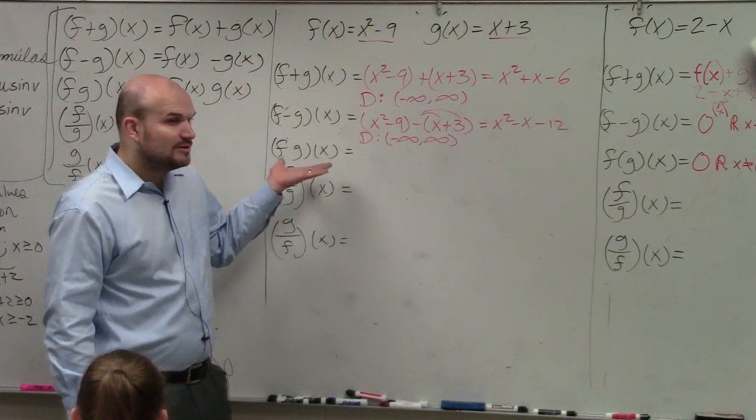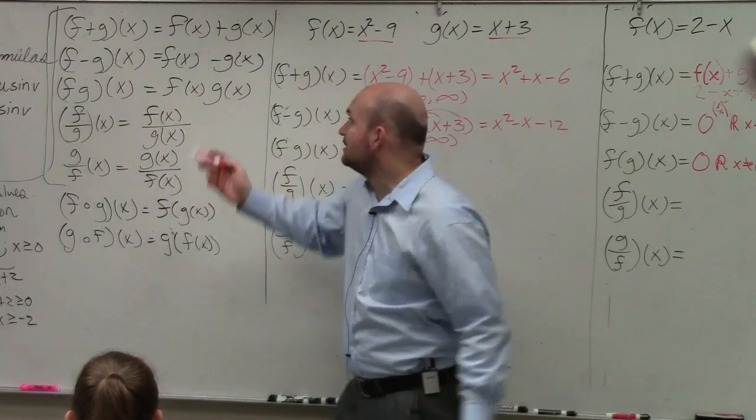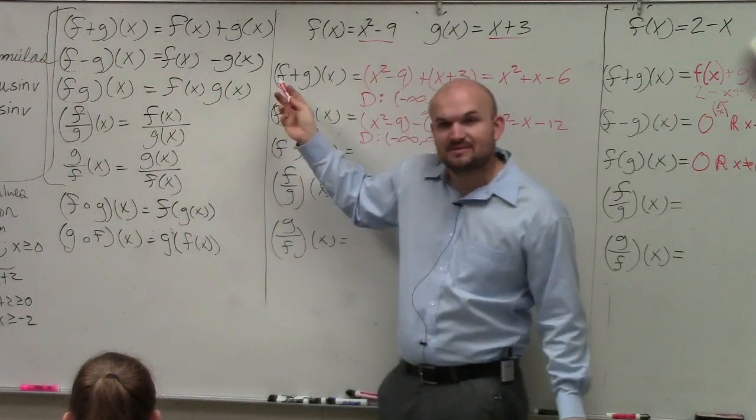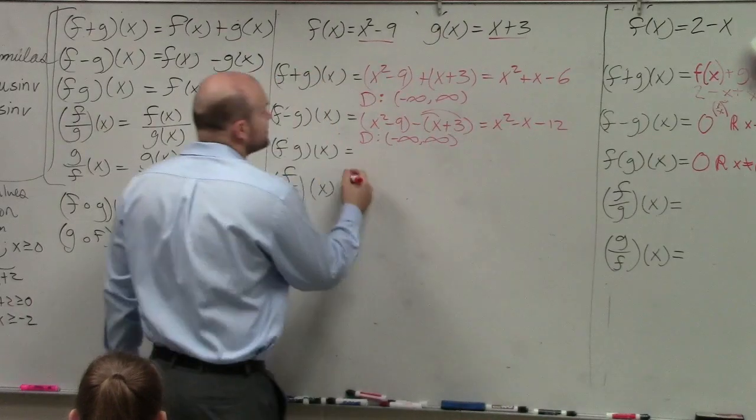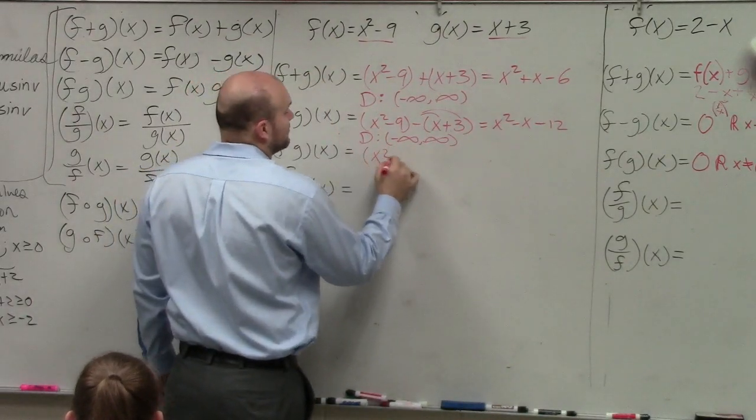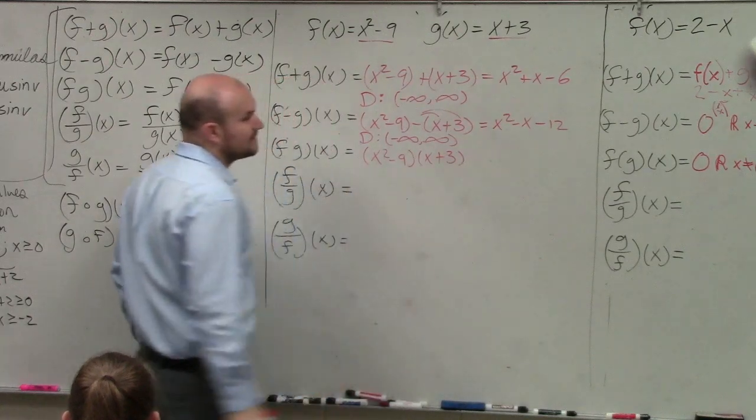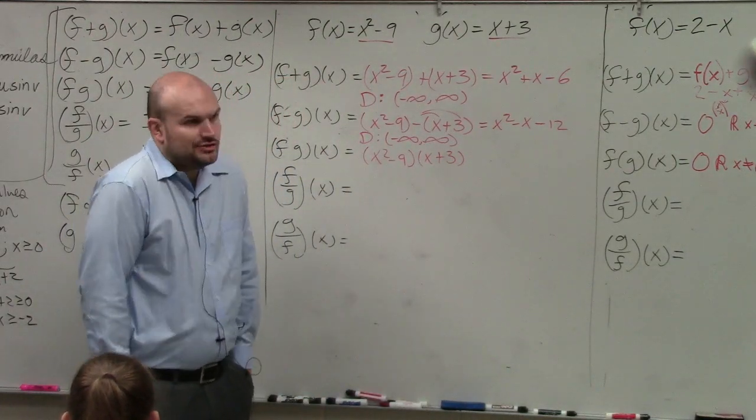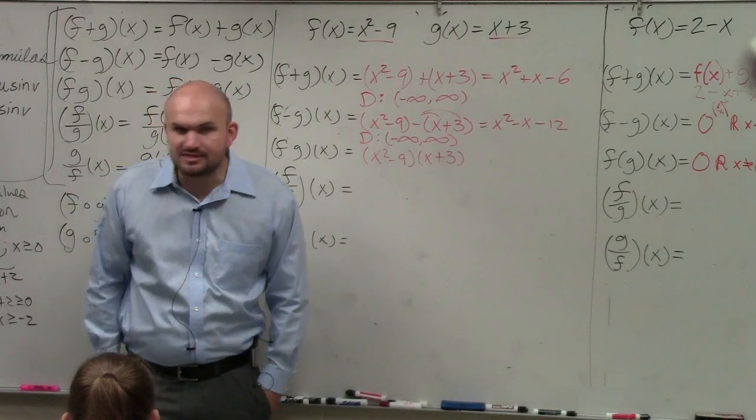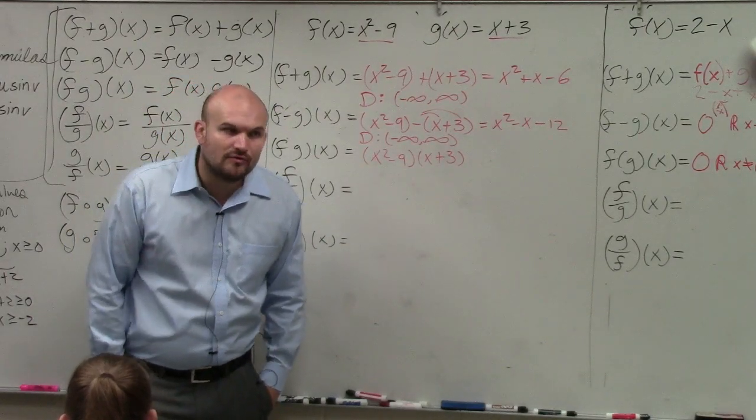In the next example, you're multiplying. All it's saying is take one function and times it by the other function. All you guys had to do was do x squared minus 9 times x plus 3. Then distribute. Well, how do we know how to do this? We knew this by FOIL.